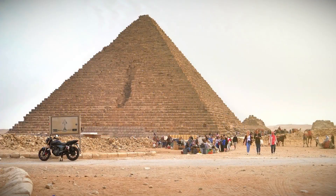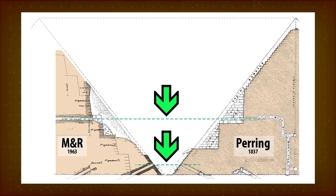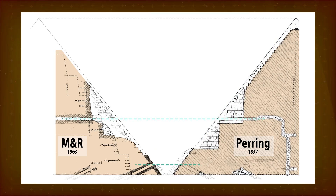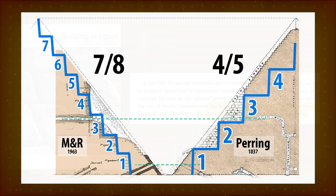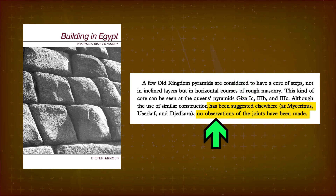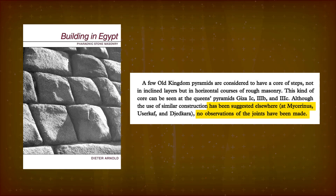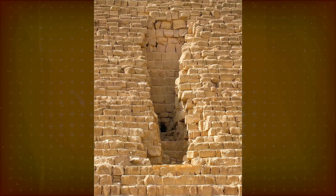There's a curious disagreement about the step count within Menkaure's pyramid. On the left is Maragioglio and Rinaldi; on the right, Pairing — both drawings are matched in scale. Pairing sees the entrance to Vyse's tunnel at the bottom of a step; M and R see it at the top of a step. If you extrapolate to the full height, Pairing sees four steps — or five if you include the topmost one — while M and R see seven or eight. Dieter Arnold, on the other hand, acknowledges these suggestions but says no observations have been made, presumably meaning he sees no justification for any steps. It kind of looks like the gash in Menkaure's pyramid is the Rorschach test of Egyptology.